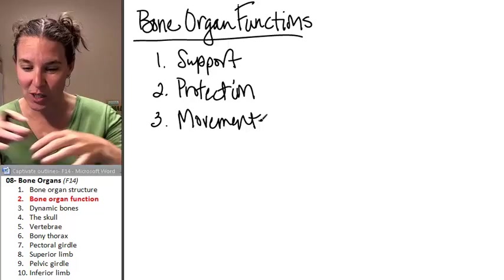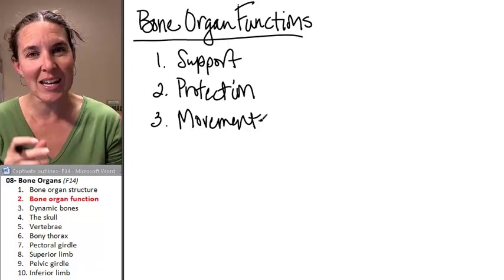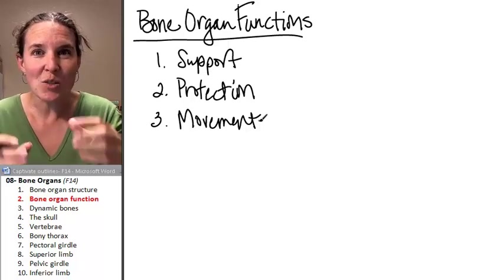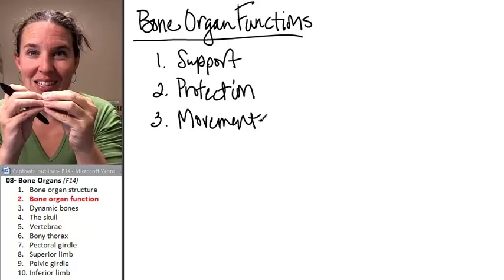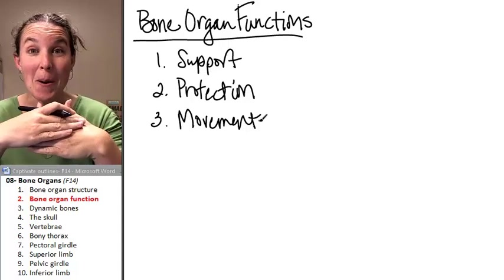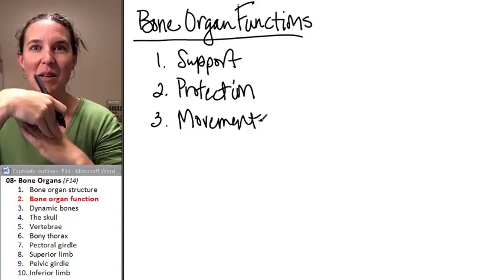Our next lesson, after we do all of our bone organs, the next lesson is joints. The places where two bones meet. We need a muscle to span that joint in order to create the movement at all.